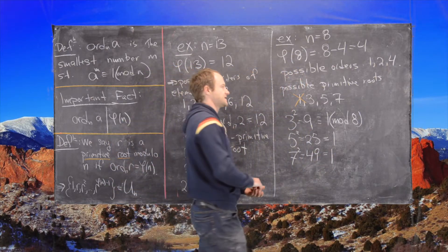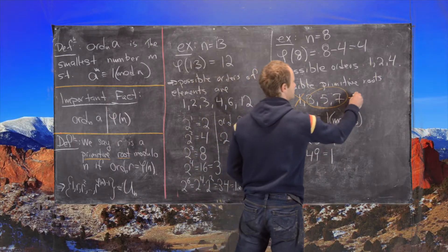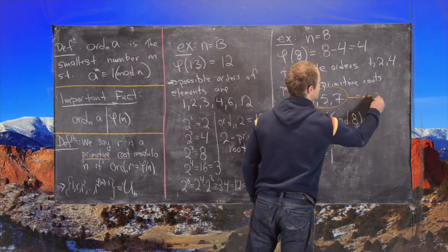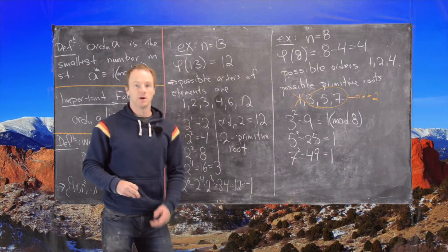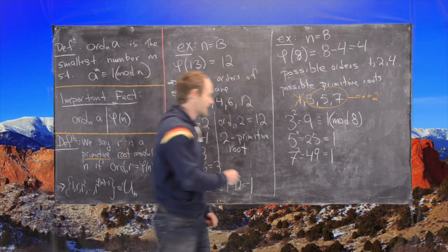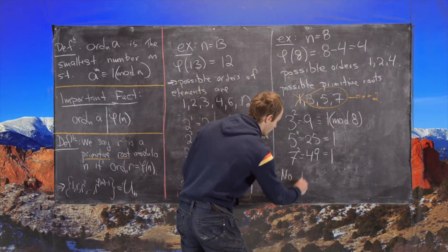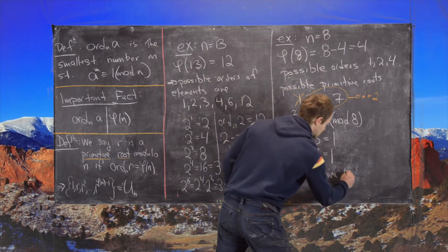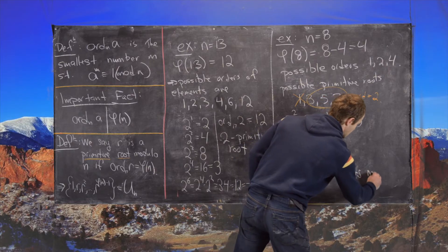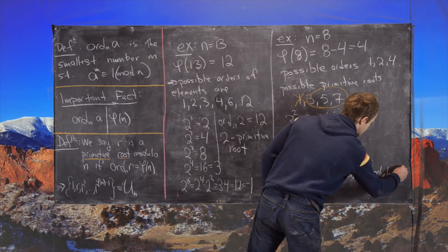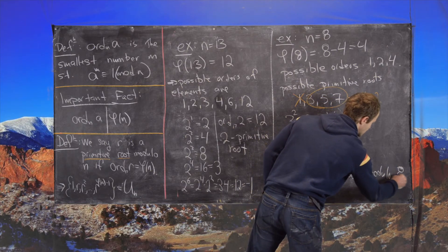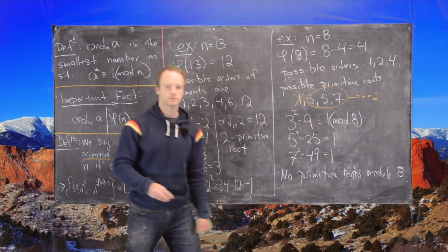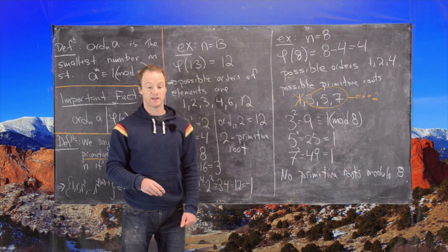So that tells us that the order of all of these is equal to 2, but those are all the possible primitive roots. So that tells us that we have no primitive roots mod 8. Okay, great. So this is the end of the video.